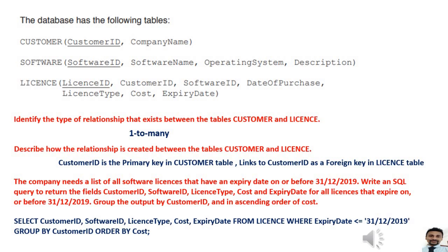If you put a star you can show all fields, but here they are asking for only five fields, so we separate them with commas. Then FROM license — license is the table — and using WHERE I am giving the condition: expiry date less than or equal to 31/12/2019. I am using less than or equal because the question says 'on or before,' meaning the same day or before that date. Then GROUP BY customer ID so that the same customer ID records come together.